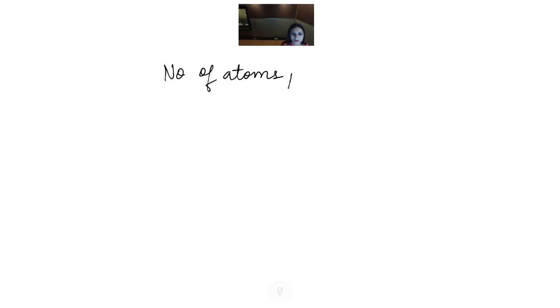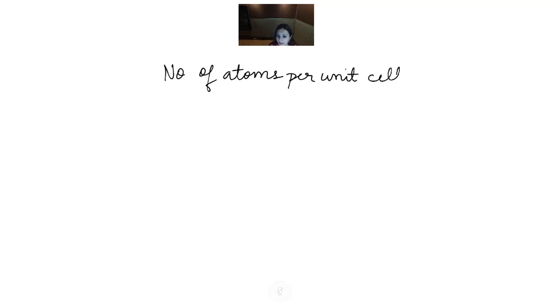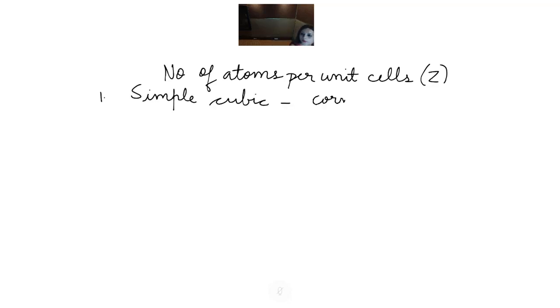In simple cubic, atoms are present only at corners. There are 8 corners and the contribution of each corner atom is 1/8. So the total number of atoms Z = 8 × (1/8) = 1.